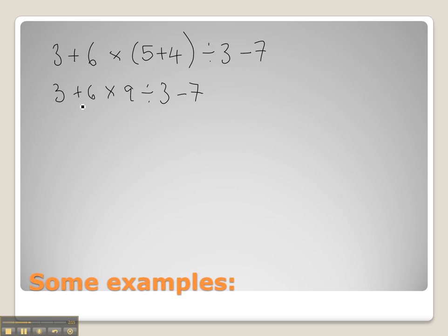Following brackets, we look for indices. There's no indices, so we're going to look at multiplication or division, whichever comes first from left to right. The 6 × 9 comes before the 9 ÷ 3, so we're going to have 3 + 54 ÷ 3 - 7. Checking again for remaining operations, 54 ÷ 3 is our next step. So 3 + 18, since 54 ÷ 3 equals 18, and we're then going to subtract 7.